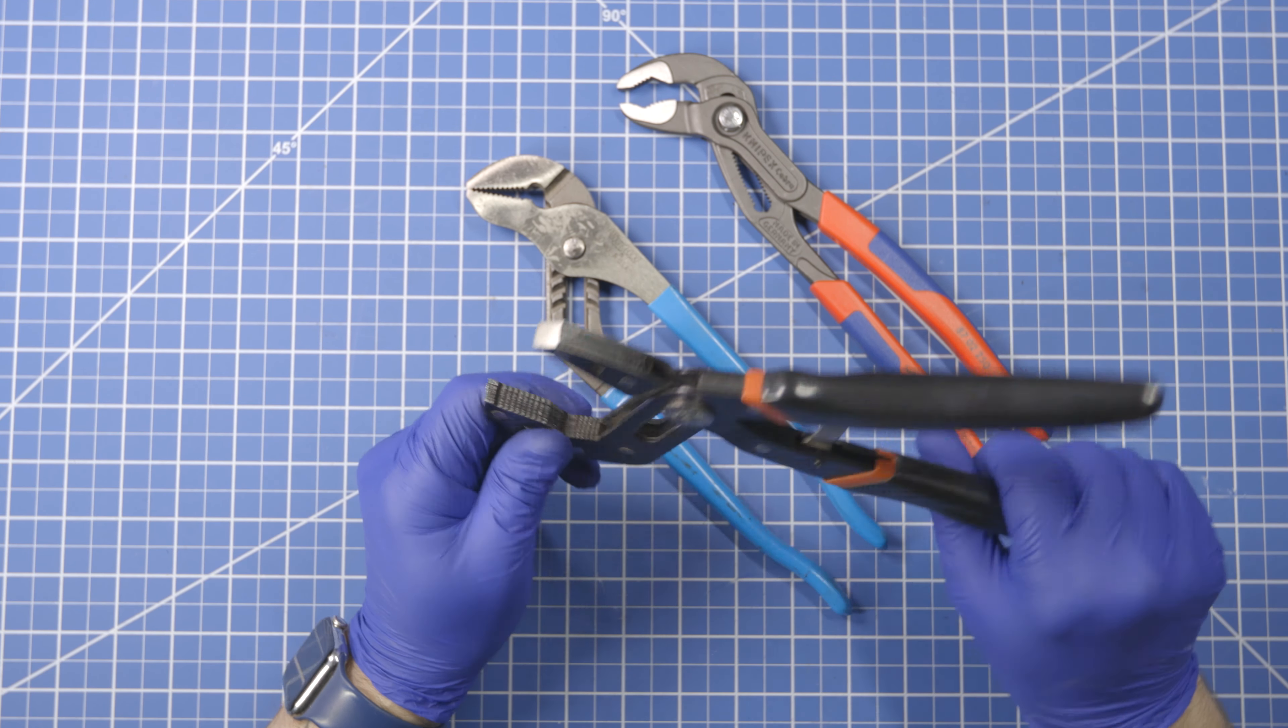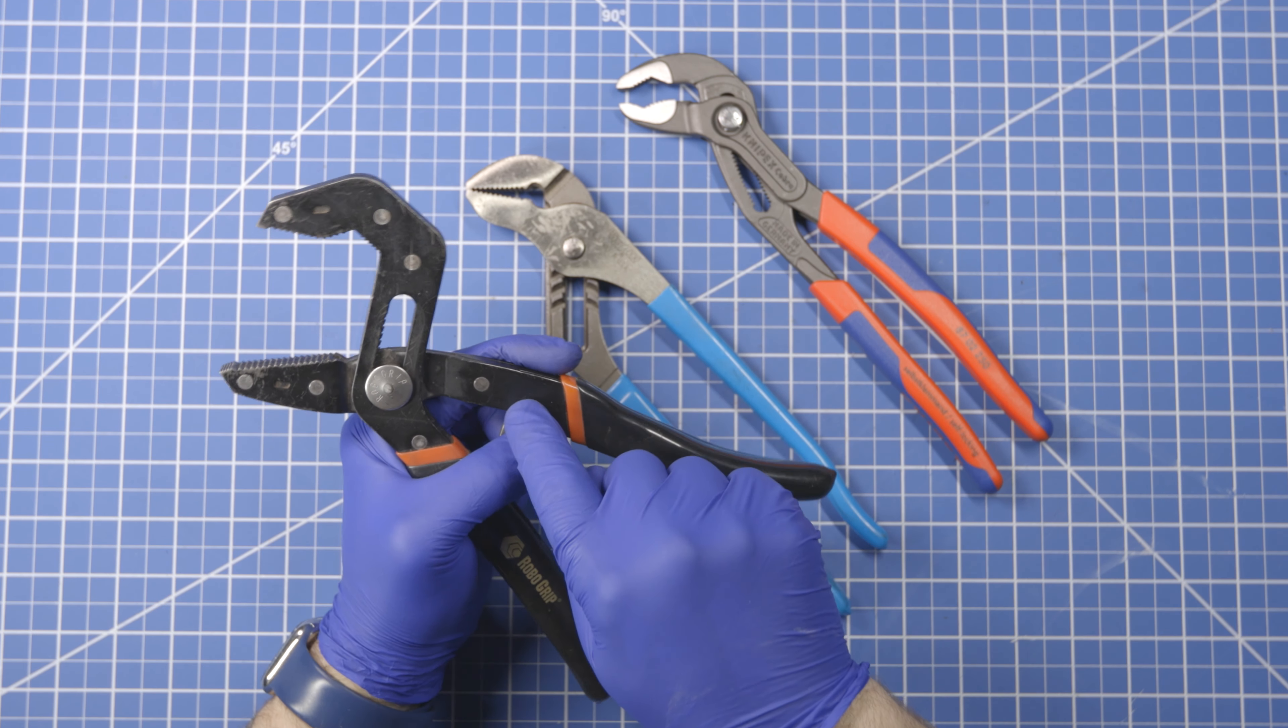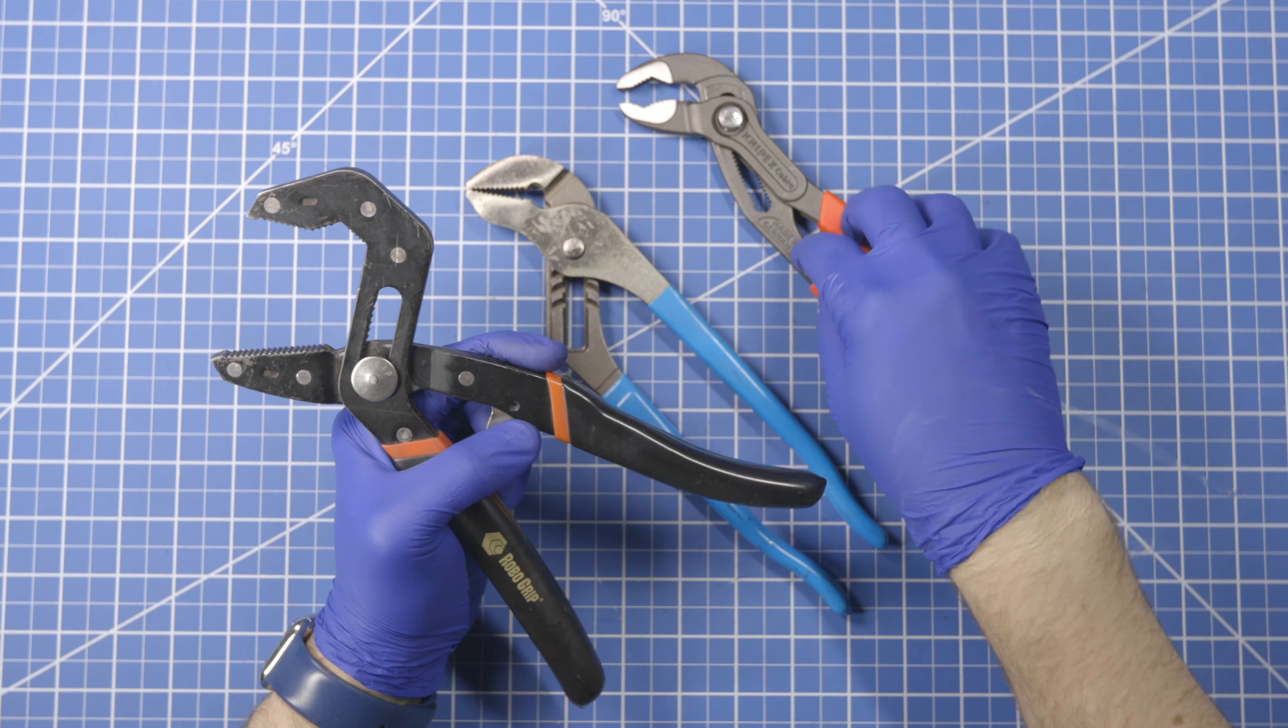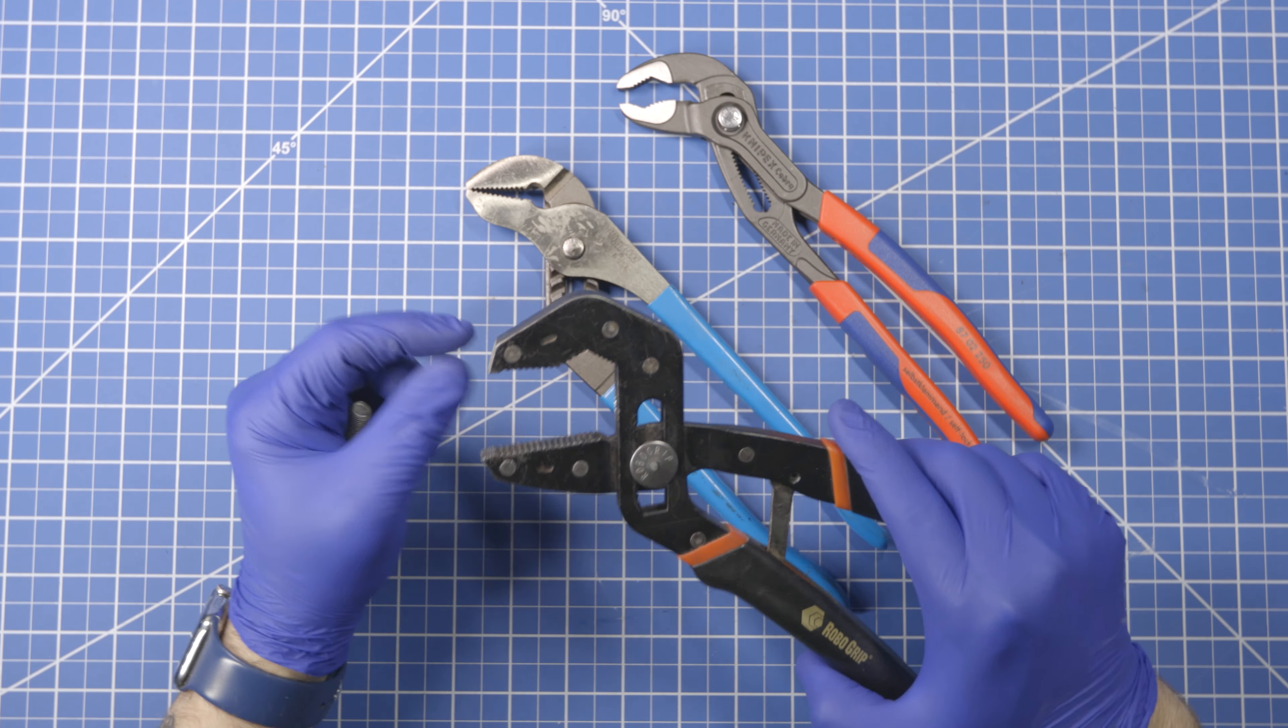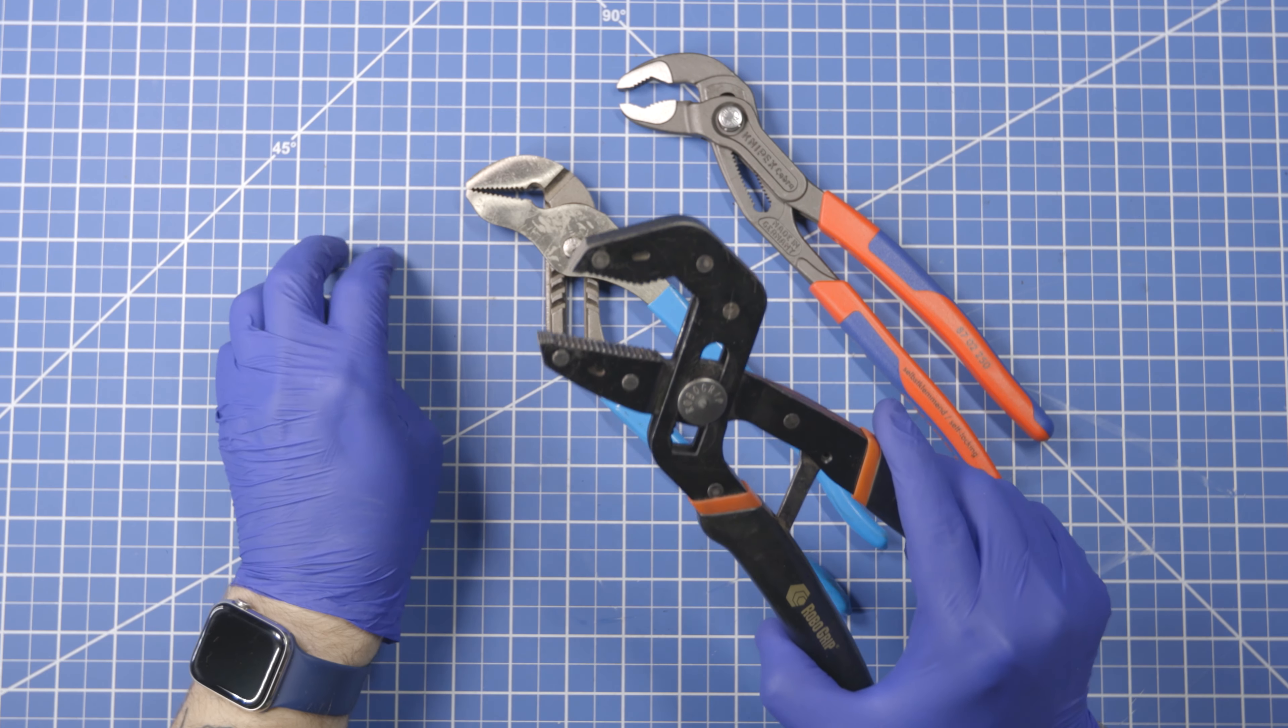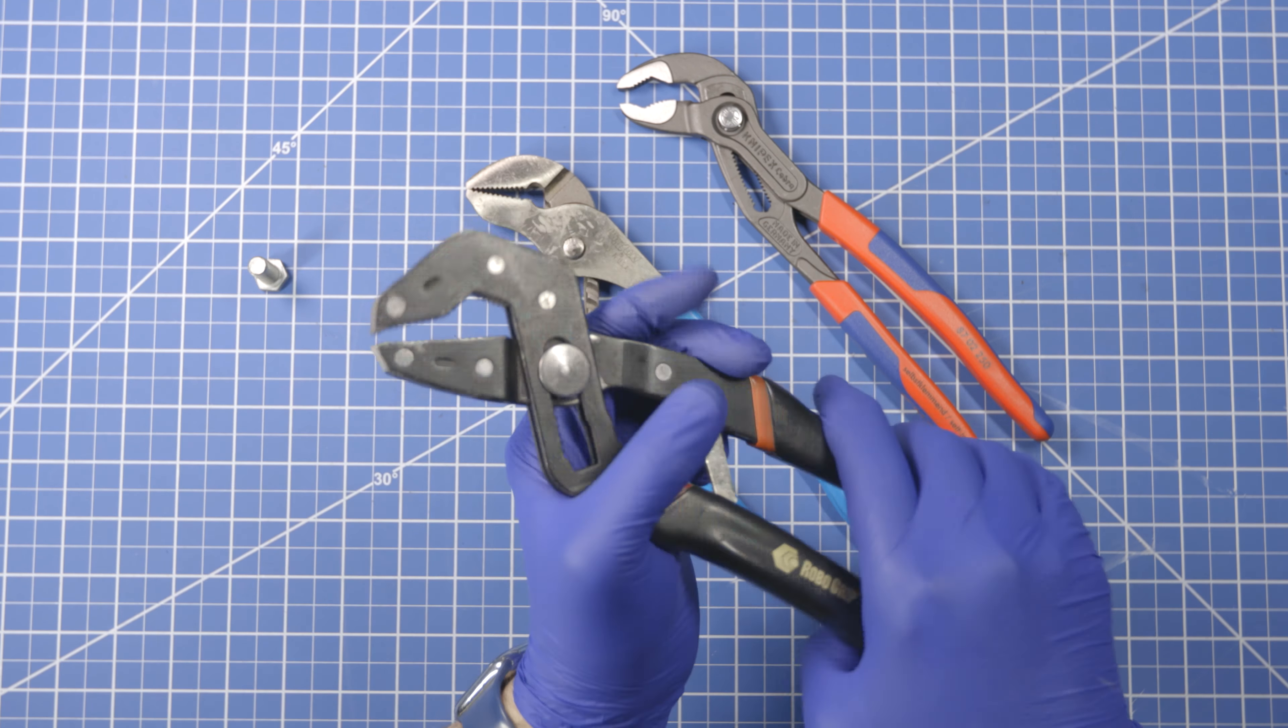But I can't imagine this is as strong or durable as one of these two if you had to do something where you're twisting it in the wrong direction or something like that. Now this does come with, you can get rubber tips that go over here that make it so that it's kind of a soft jaw plier, and then I do use it for stuff around woodworking.